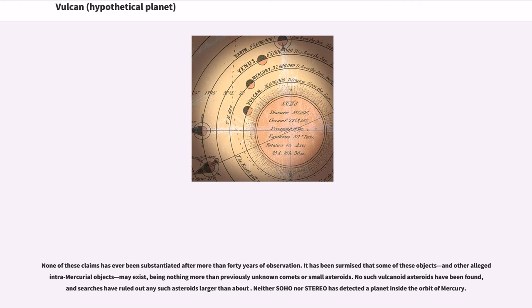None of these claims has ever been substantiated after more than 40 years of observation. It has been surmised that some of these objects, and other alleged intramercurial objects, may exist, being nothing more than previously unknown comets or small asteroids. No such vulcanoid asteroids have been found, and searches have ruled out any such asteroids larger than about 6 kilometers. Neither SOHO nor STEREO has detected a planet inside the orbit of Mercury.